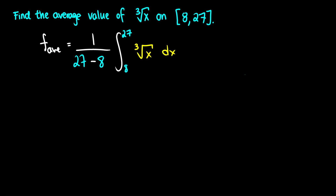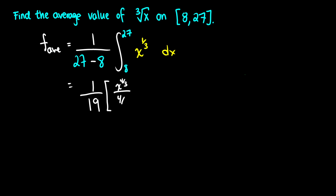When we have cubed roots or square roots inside integrals, the easiest approach is to convert the form. So instead of writing the cubed root of x, I'll rewrite this as x to the one-third, and at this point it is just a matter of computation. So 1 over 27 minus 8 is 1 over 19. Now we do the integral from 8 to 27 of x to the one-third dx, which gives x to the four-thirds over four-thirds, evaluated from 8 to 27. That's just the power rule in reverse.